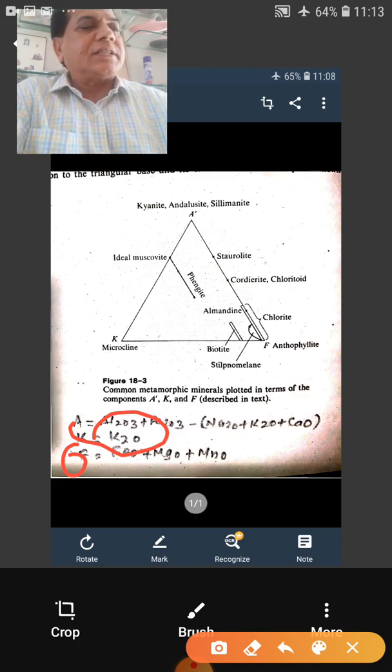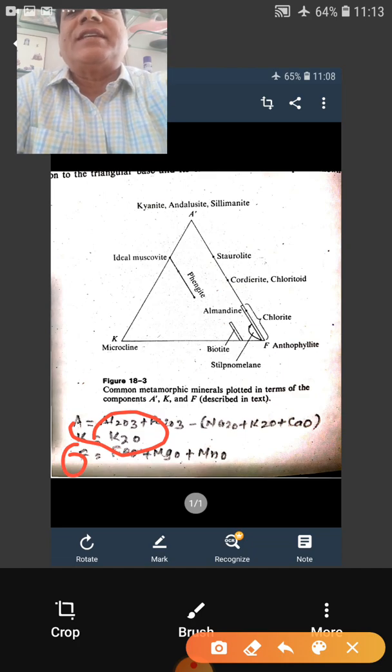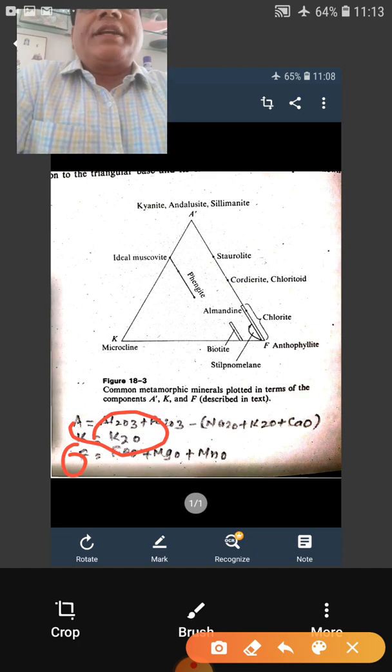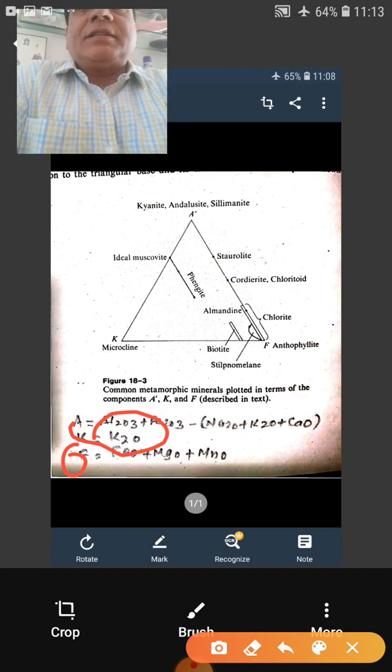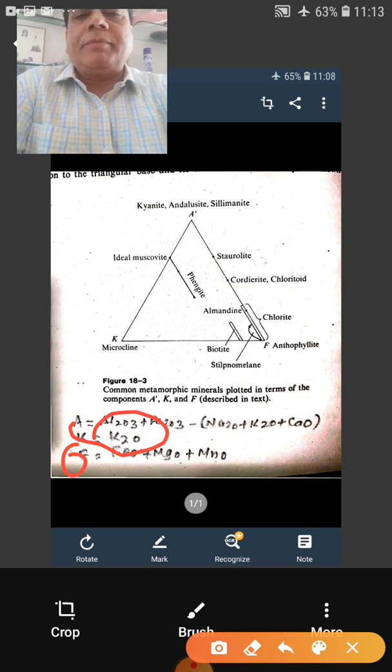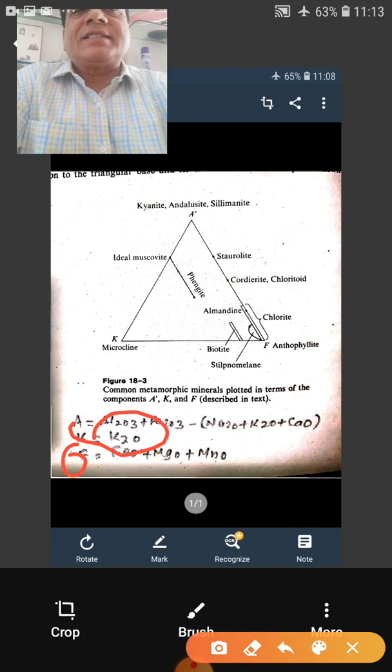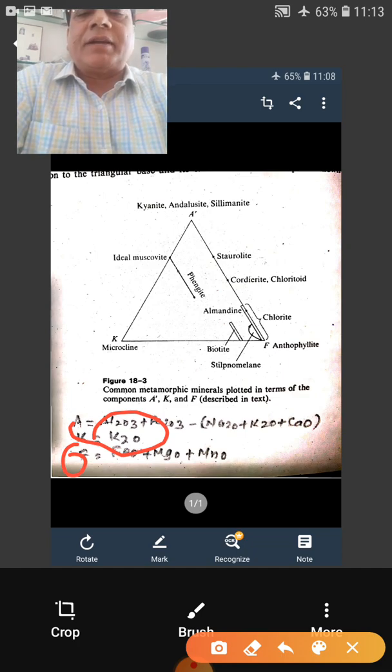The correction for the accessory minerals is made, means the accessory minerals they are not considered in the plotting of AKF diagram similar to ACF diagram. So the first step will be that we will make correction for the accessories. The various accessory minerals that are present generally are say ilmenite.